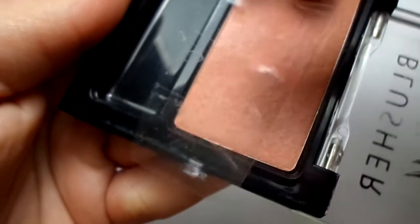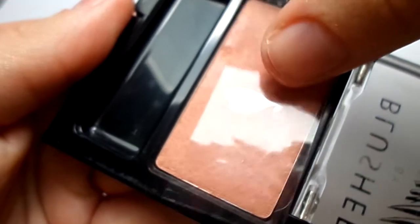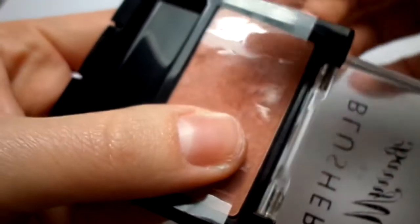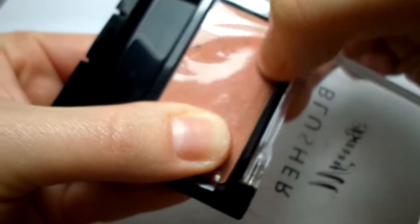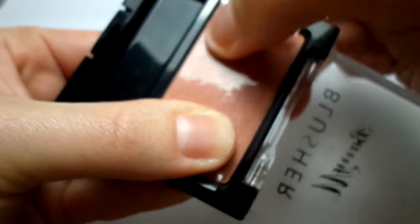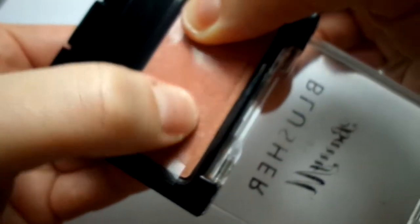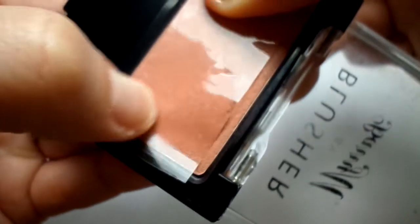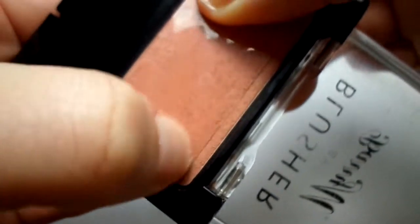What we're going to do is take some tape - any kind as long as it's sticky - and pop that over the powder, press it on, and really work it in so it sticks to the blush and picks up that greasy residue.